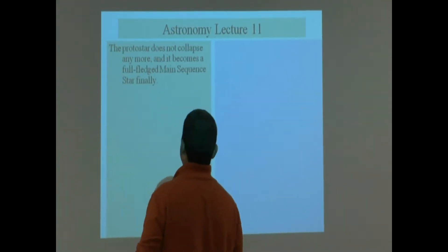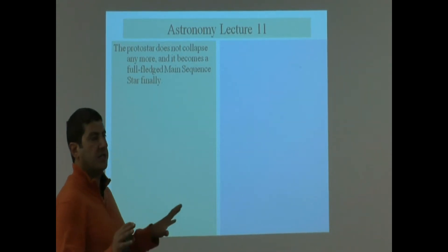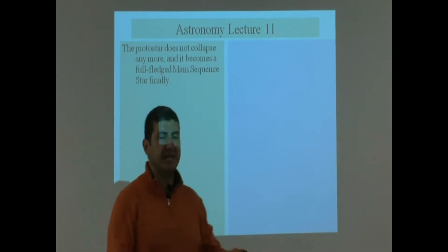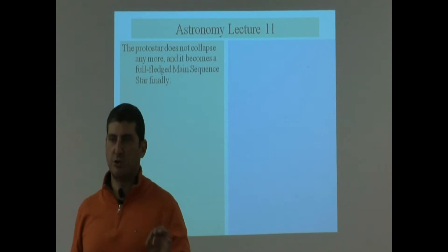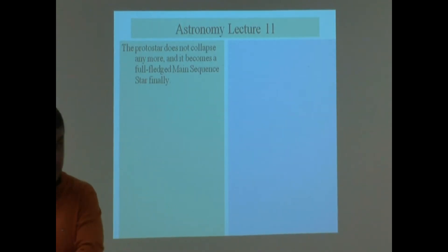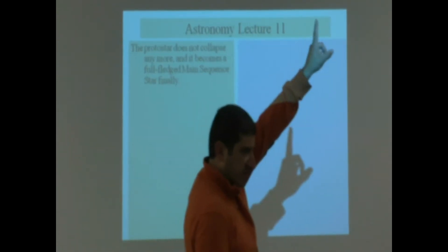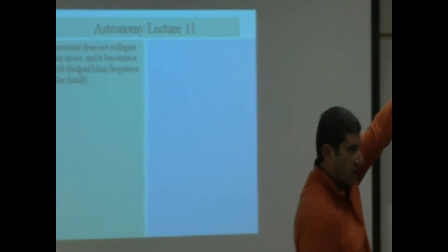The protostar does not collapse anymore. Now, it is finally settled on the main sequence. It's known as a fully fledged main sequence star. The bipolar flows stop. No more energy shot in both directions.